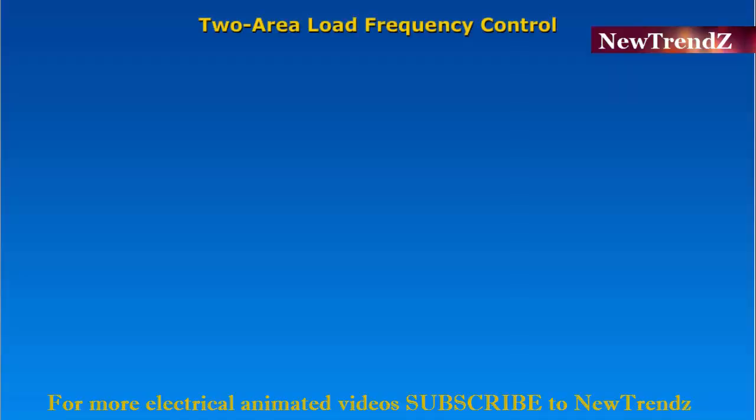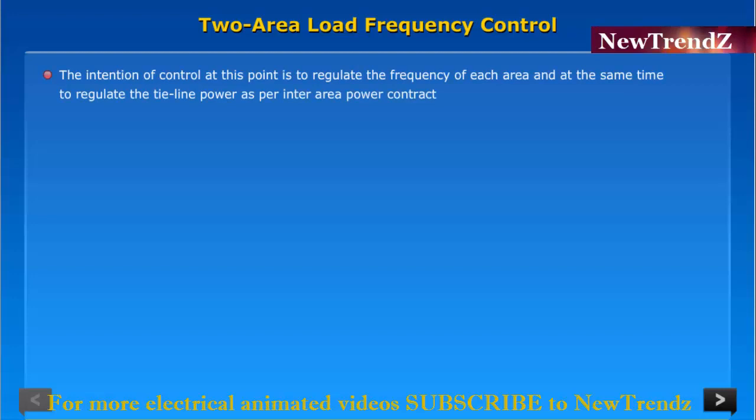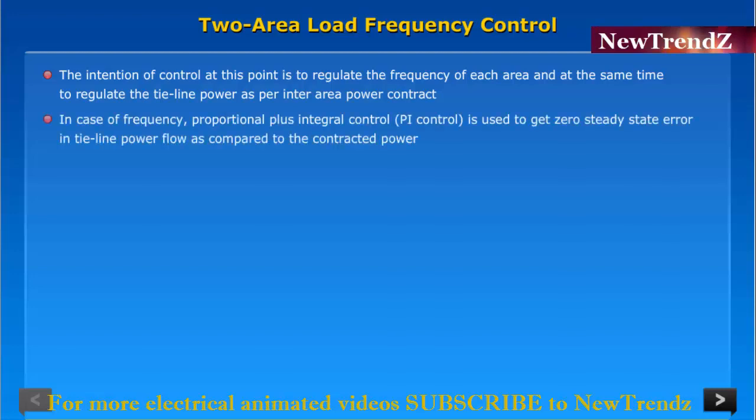Two-area load frequency control. The intention of control at this point is to regulate the frequency of each area and at the same time to regulate the tie line power as per inter-area power contract. In case of frequency, proportional plus integral control (PI control) is used to get zero steady state error as compared to the contracted power.